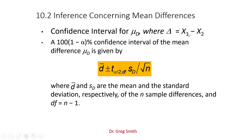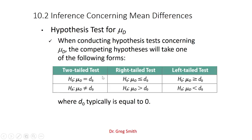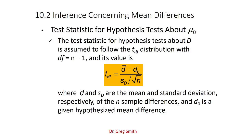When we do matched pairs, we work with the difference d-bar. It's just a t-test — run it exactly as you would a single-sample t-test from Chapter 8, where d-bar is the mean of differences and s-sub-d is the standard deviation of those differences, with n − 1 degrees of freedom. Two-tail, upper tail, lower tail — same structure as before. D-sub-0 is the assumed difference, most often zero. The t statistic is (d-bar − d0) / (s_d / √n).